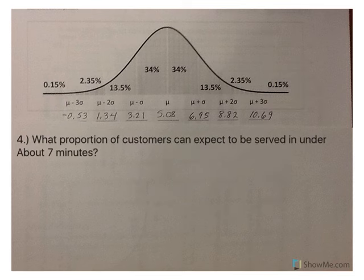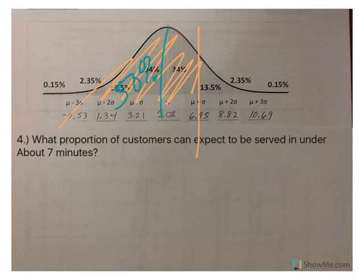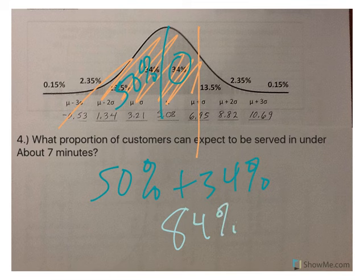What proportion of customers can expect to be served in under 7 minutes? That's about here. Under that would be to the left. So halfway over here is 50, add on this 34. So 50% plus 34% means that approximately 84% will be served in under 7 minutes.